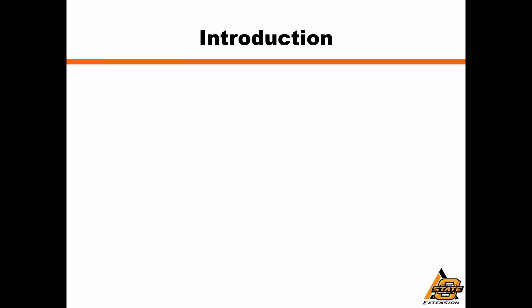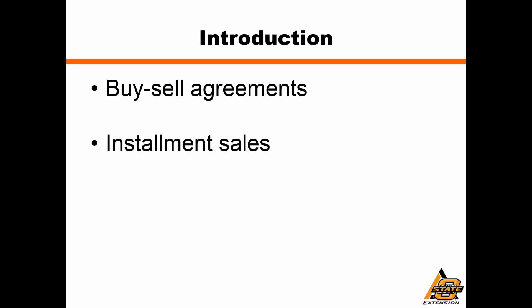There are three basic transactional types that we're going to talk about today. First off is the buy-sell agreement, which you're going to see most often in the context of a business entity such as a corporation or LLC being used as a transition tool. We're going to talk about installment sales, which are a sale of property where the price is recognized over time, and then there are leases. Leases and installment sales can resemble each other but there are also some pretty significant differences.